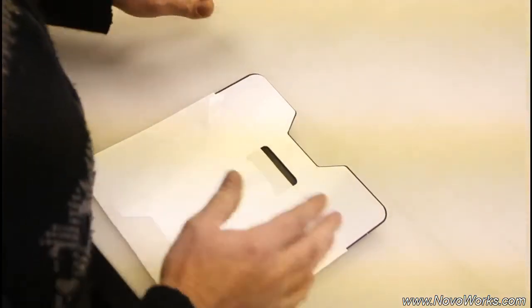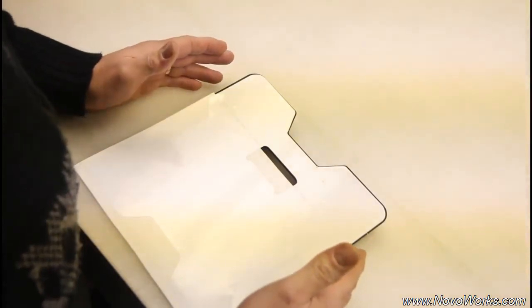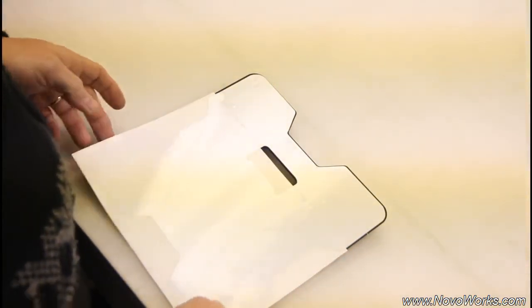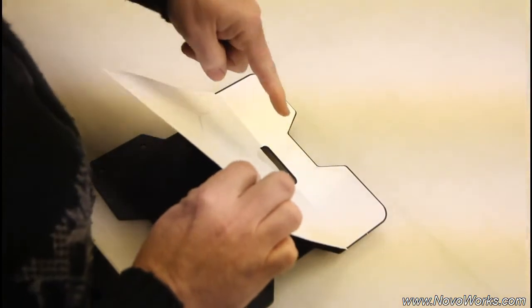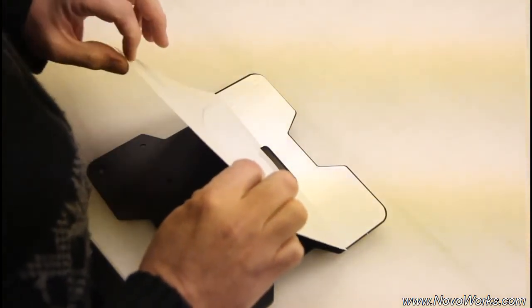And then once that's adhered, you've got yourself a good hinge point. So now what you can do is lift up the paper, and you'll see that it's still attached, obviously, to what we're applying it to. Fold it over.